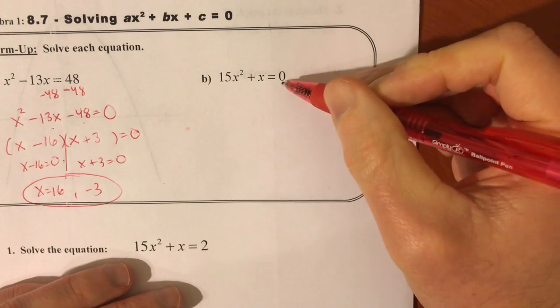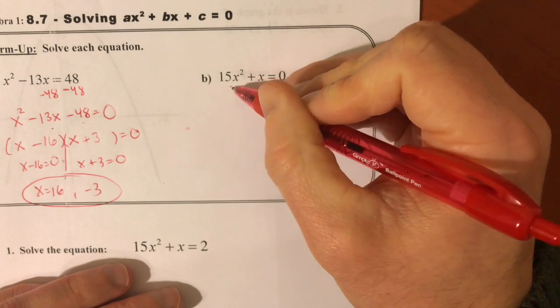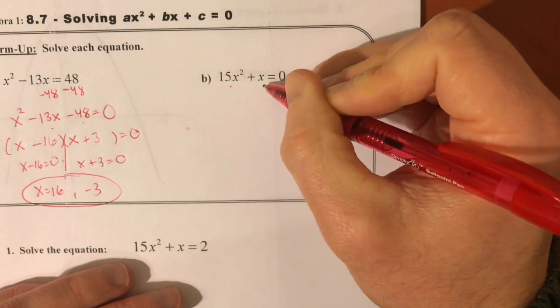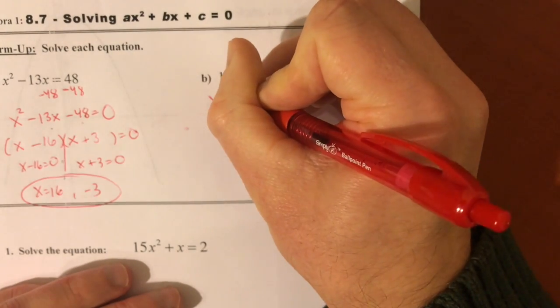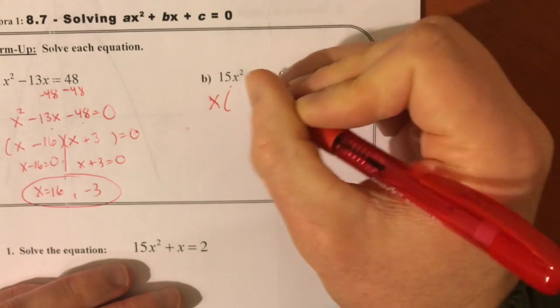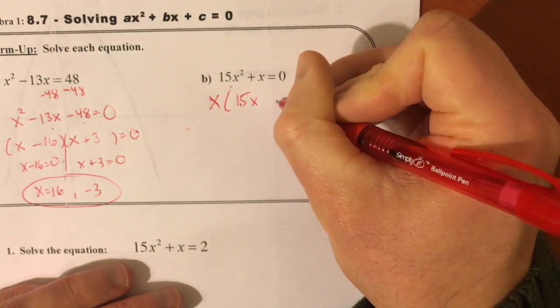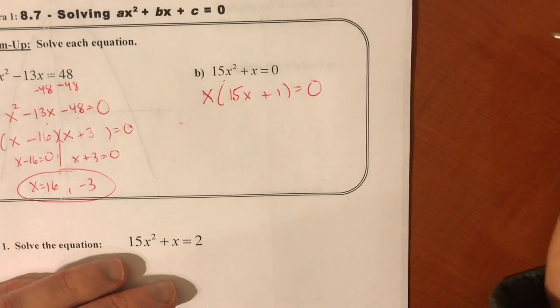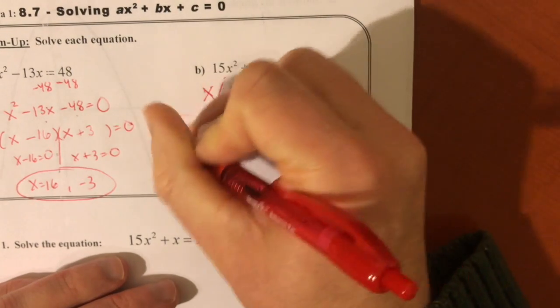Part B is already equal to 0, but this is not a trinomial, this is just a binomial here. And when it comes to factoring this sort of one, I can take out a greatest common factor first. And that would be only x in this case. So taking x out will leave you with 15x plus 1 on the inside. And setting each factor equal to 0 will leave you with x equals 0. There's one solution.